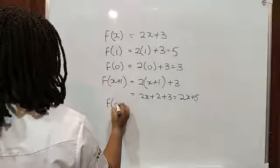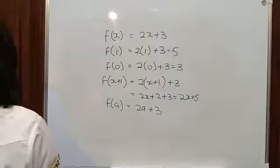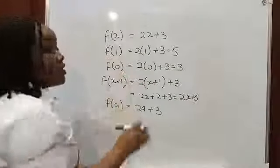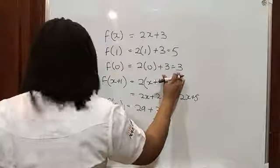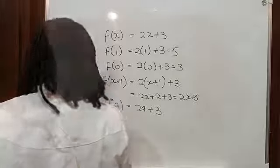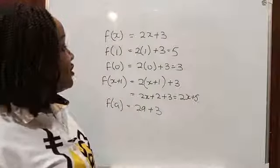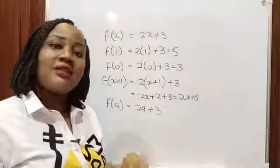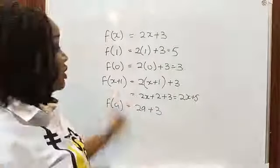Same way, you can even say f(a) equals 2a plus 3. So that's basically what a function is all about. The output value is also called the image. So the image of 1 is 5, the image of 0 is 3, the image of x+1 is 2x+5, and the image of a is 2a+3. The values of x are called the independent variable, while f(x) is the dependent variable — the function of x depends on the values of x.